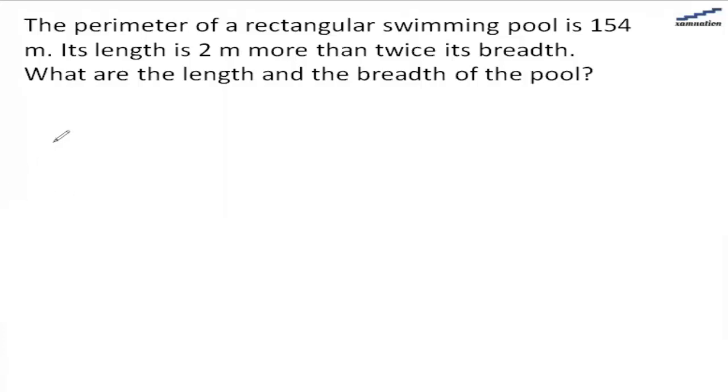In this question we are told that the perimeter of a rectangular swimming pool is 154 meters. So this is the rectangular pool.